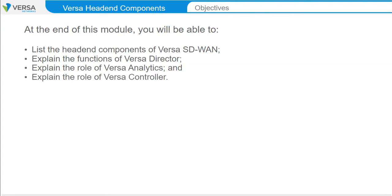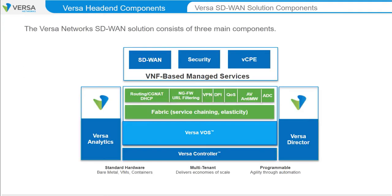The Versa Networks SD-WAN solution consists of three main components: Versa Operating System, or VOS, which is the software of Versa Controller and CPE devices; Versa Director; and Versa Analytics. These three components provide a complete and intuitive architecture for SD-WAN implementation. We will look at each component in more detail.